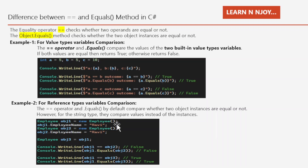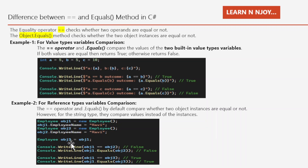Here I am creating two instances of Employee: obj1 is equal to new Employee, and obj1 dot EmployeeName is equal to Ravi. Similarly, obj2 is equal to new Employee, and obj2 dot EmployeeName is also Ravi. But obj1 and obj2 are two different instances of the Employee class. When we compare obj1 with obj2 using the double equal operator, it gives false, and obj1 dot equals obj2 also gives false.